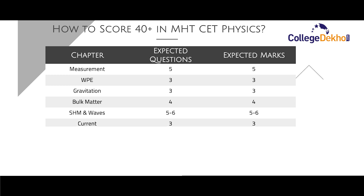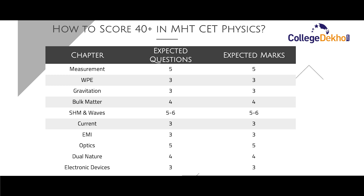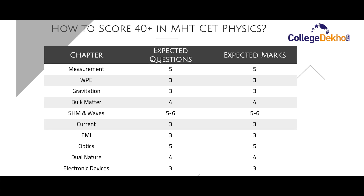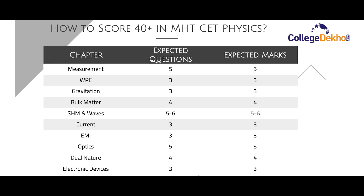For the Measurement chapter, you can expect 5 questions for 5 marks. For Work, Power and Energy, you can expect 3 questions for 3 marks. For Gravitation, you can expect 3 questions for 3 marks. For Properties of Bulk Matter, you can expect 4 questions for 4 marks. For SHM and Waves, you can expect 5 to 6 questions for 5 to 6 marks. For Current Electricity, you can expect 3 questions for 3 marks. For EMI, you can expect 3 questions for 3 marks. For Optics, you can expect 5 questions for 5 marks. For Dual Nature of Radiation, you can expect 4 questions for 4 marks.